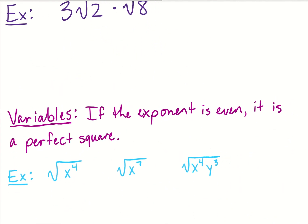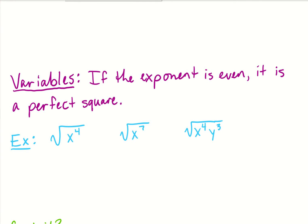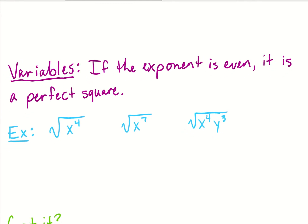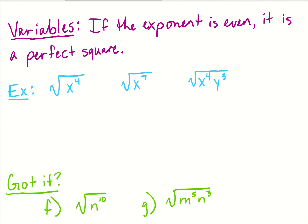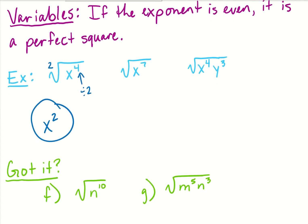Moving on, we're going to look at variables. What happens if there are variables under the radical? If the exponent is even, that means we have a perfect square; if it's odd, we don't. For the first example: the square root of x to the fourth power — 4 is an even number, so this is a perfect square. I take that exponent and divide it by 2 because there's an imaginary 2 in our square root. 4 divided by 2 is 2, so the square root of x to the fourth is just x squared.